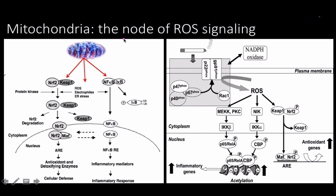The mitochondria is a major node of reactive oxygen species production. NF-κB is a hugely important transcription factor — in this case for inflammation. There's also a pathway involving IKK, which is part of NF-κB, resulting in acetylation and expression of inflammatory genes.